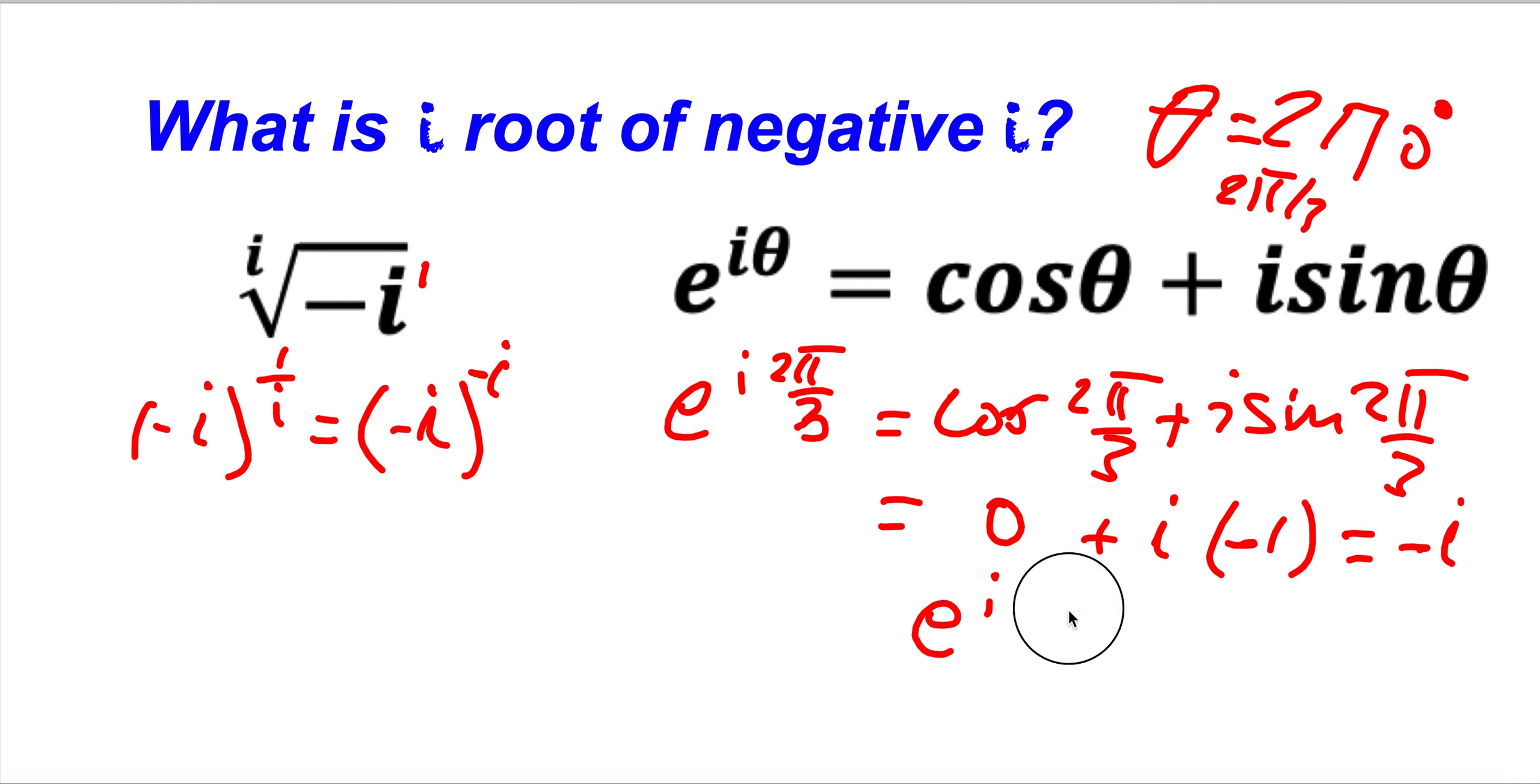Let me change this theta because we already replaced this one by 2 pi over 3, is equal with minus i. So now this expression here, minus i, we can replace by this: e in exponent i times 2 pi divided by 3. Everything here is...